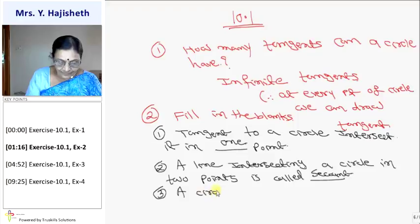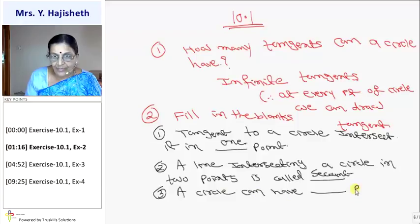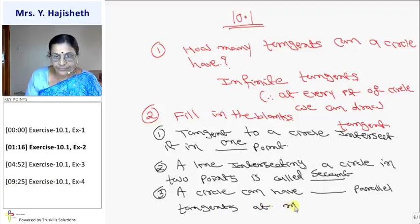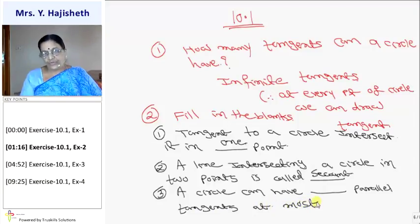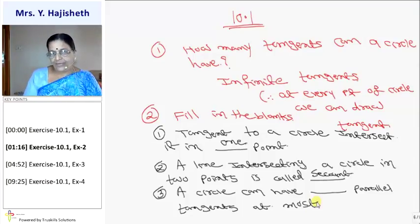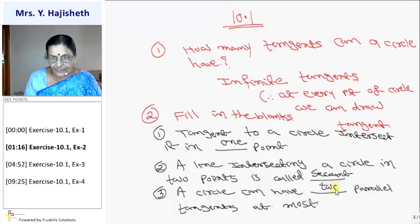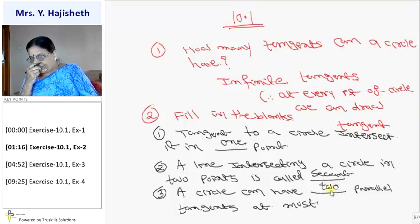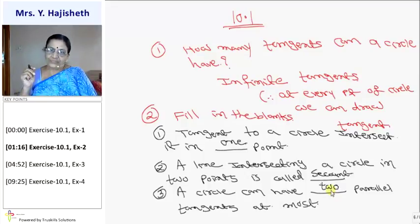The third fill in the blank is: a circle can have how many parallel tangents at most? A circle can have two parallel tangents at most.